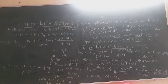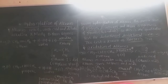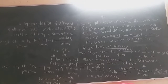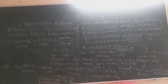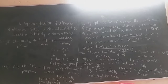Let us consider the hydroxylation of alkenes. This is the next chemical reaction of alkenes — the hydroxylation of alkenes. You know that alkenes contain a carbon-carbon double bond in their molecule. Here, alkenes will react with cold and dilute alkaline potassium permanganate (KMnO4).